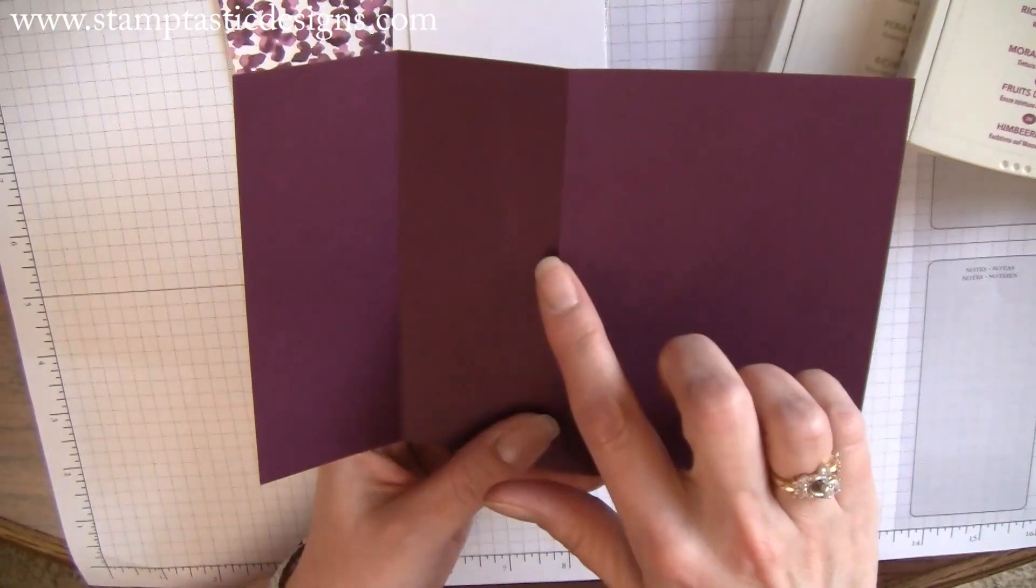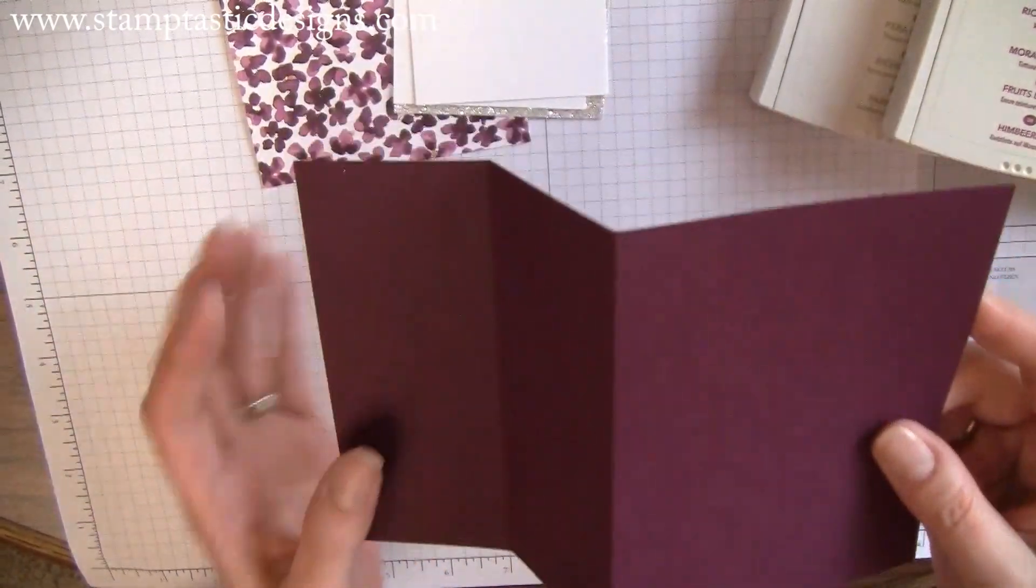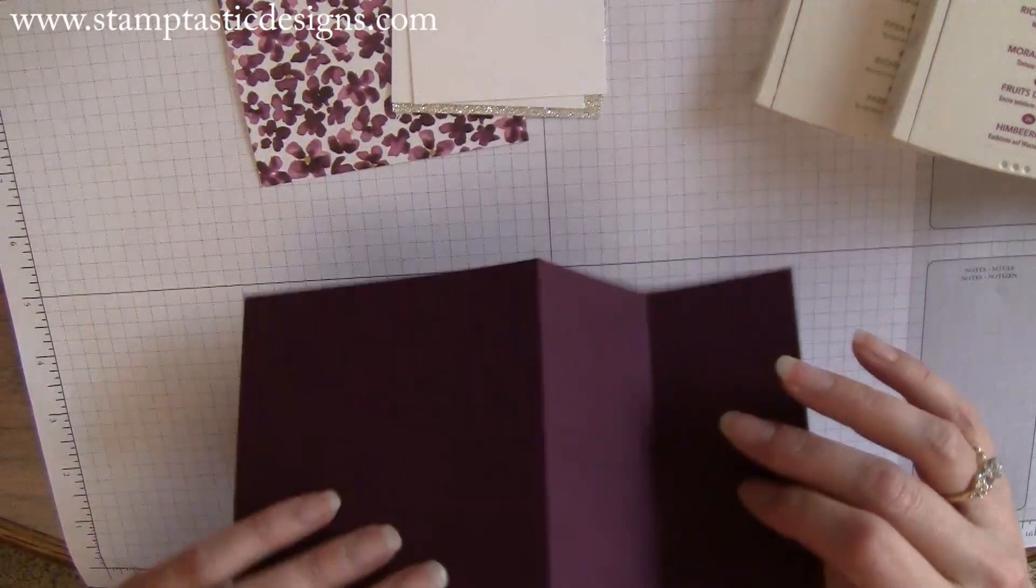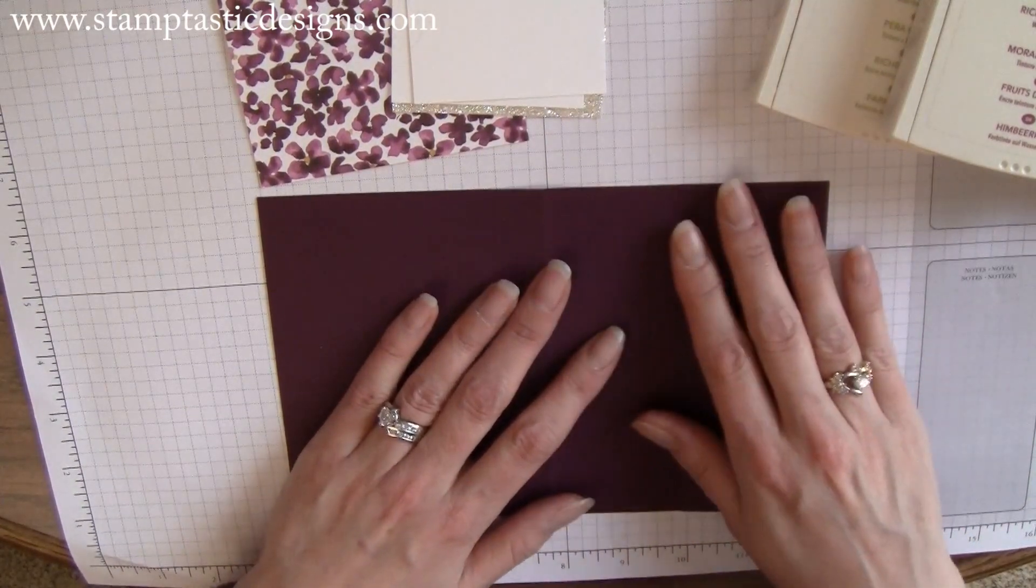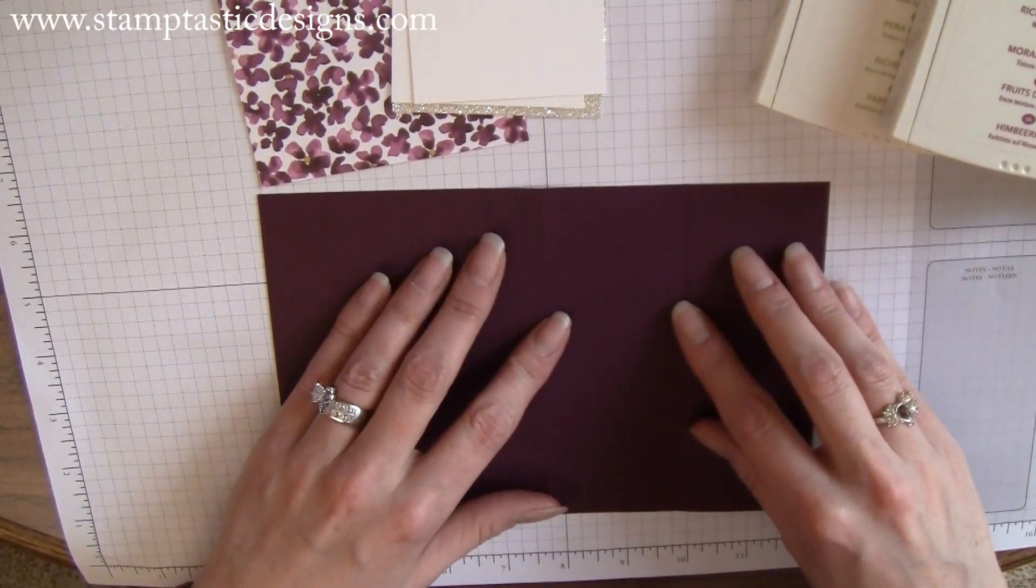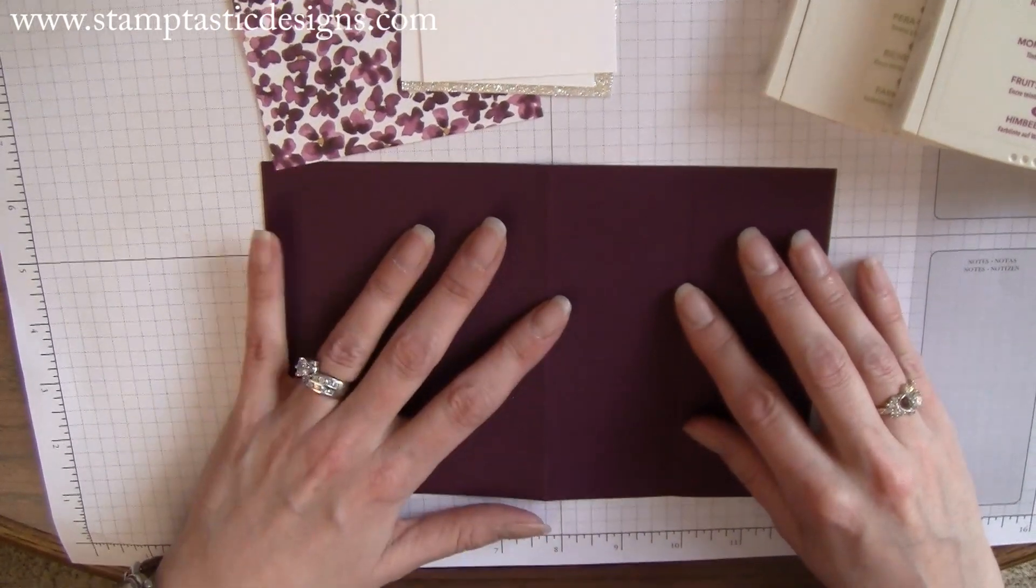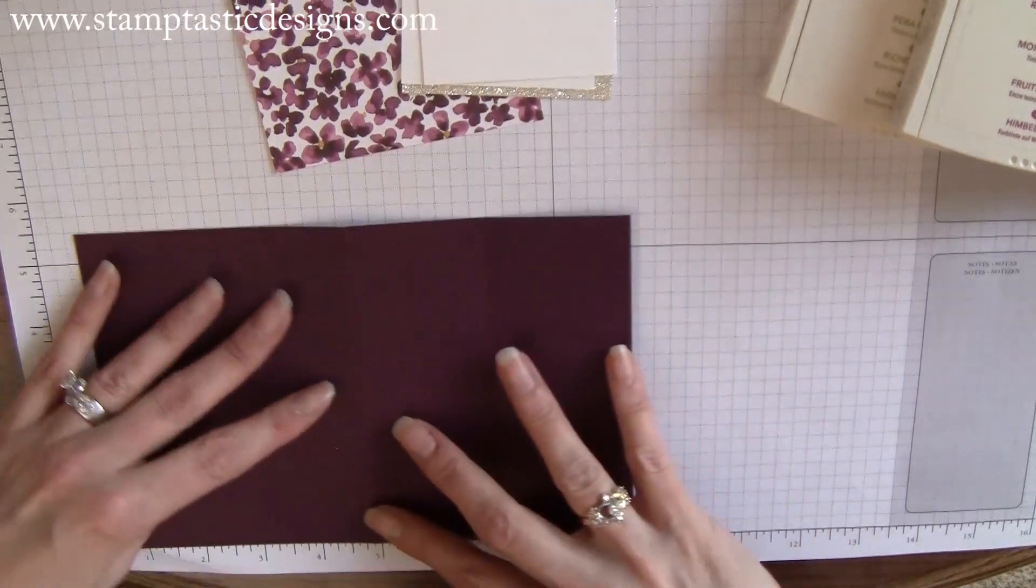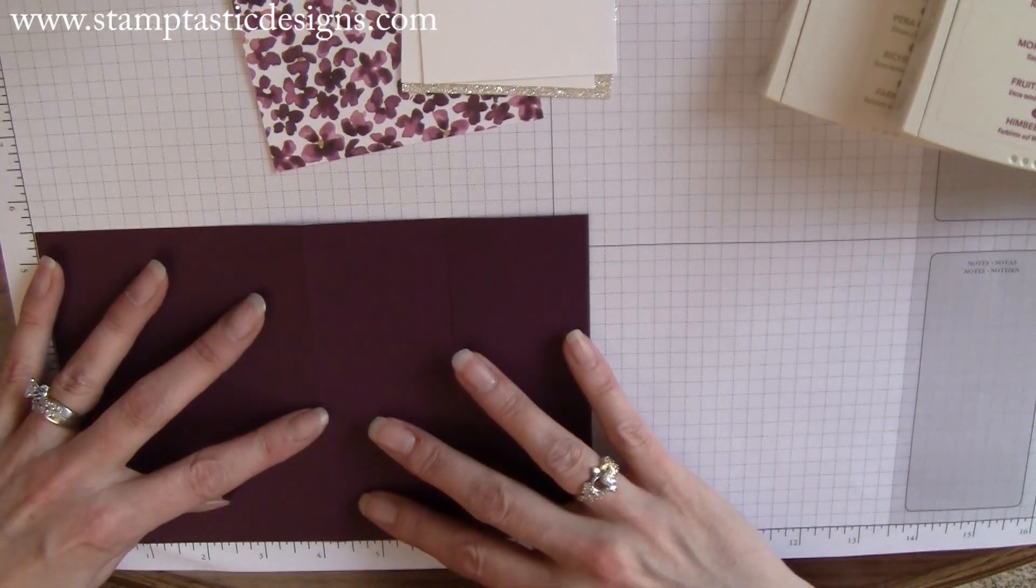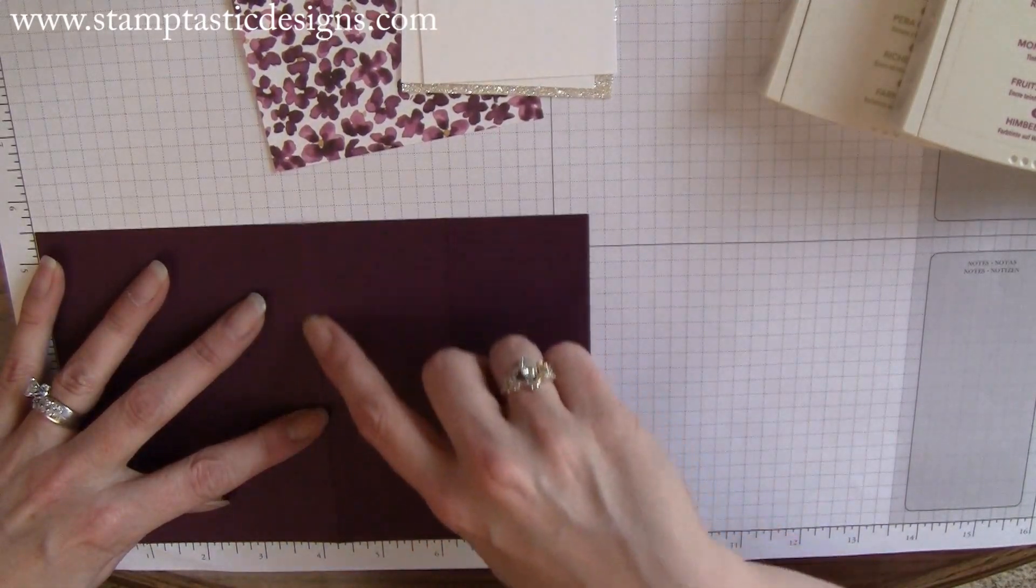You're going to score it in the middle. Take your cardstock and put it on your scoring board, or you can do this right on your cutter. Score it right in the center, which is at four and a quarter.